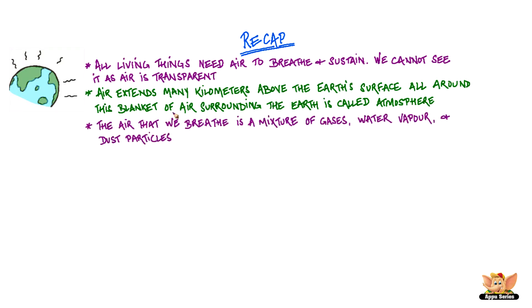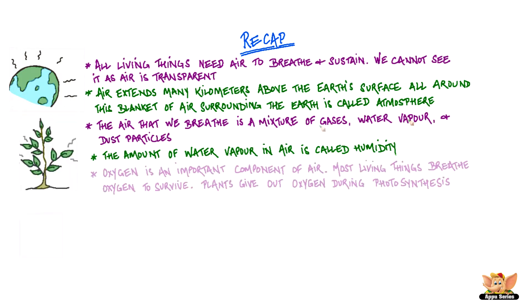The air that we breathe is a mixture of gases, water vapor and dust particles. The amount of water vapor in air is called humidity. Oxygen is an important component of air. Most living things breathe oxygen to survive.